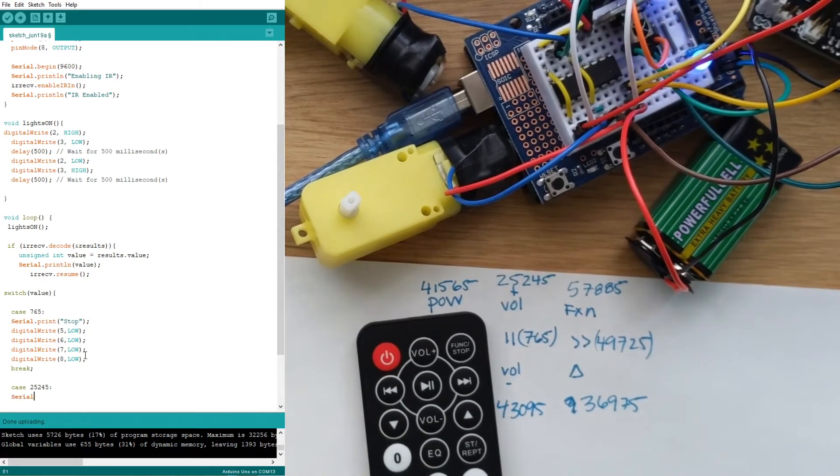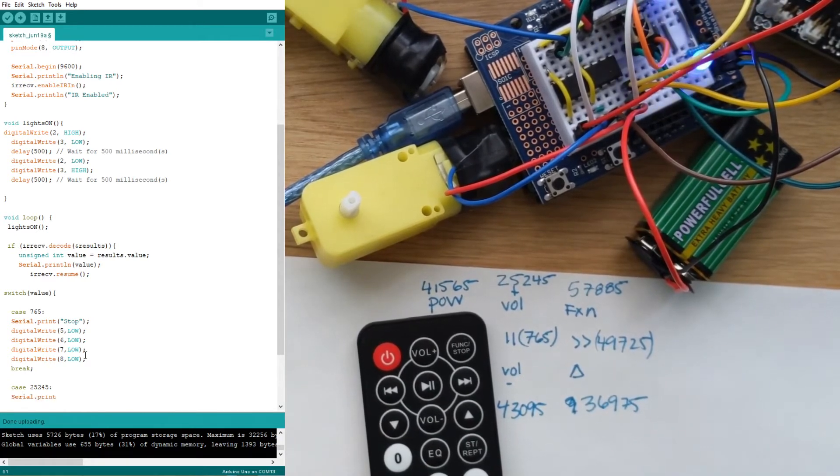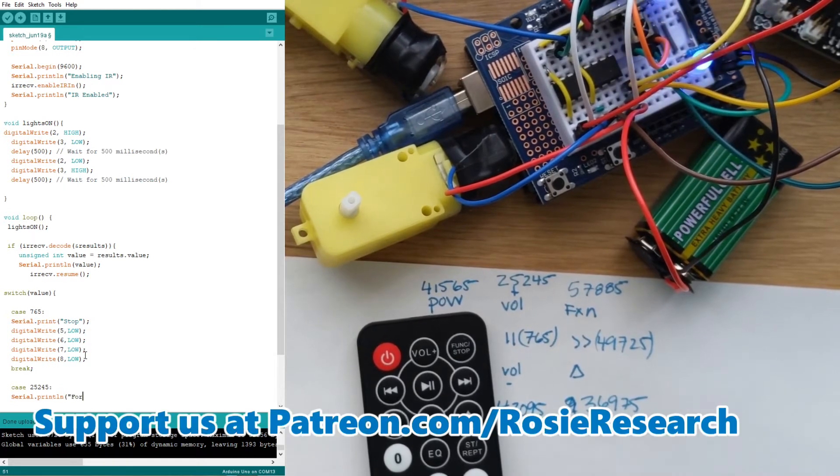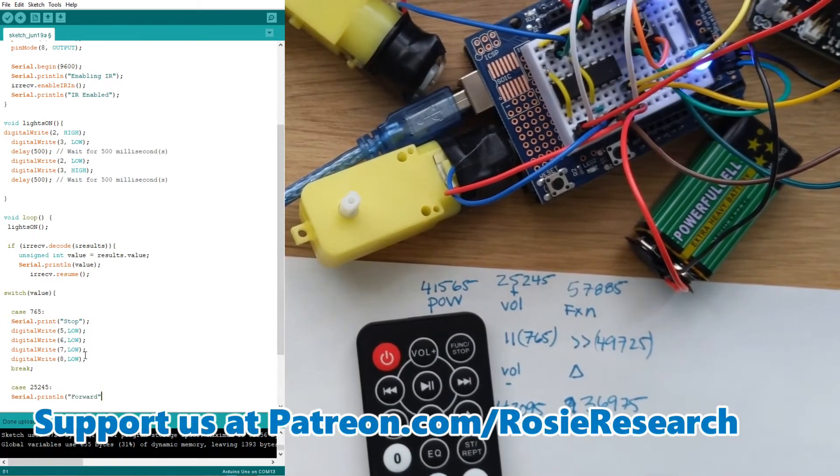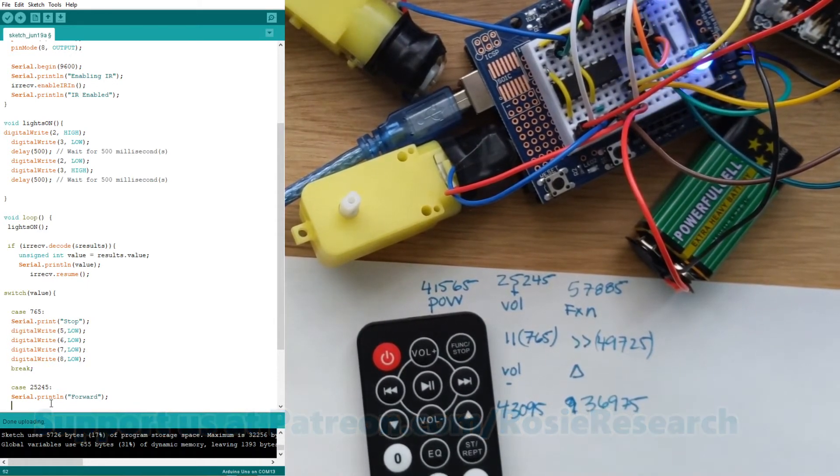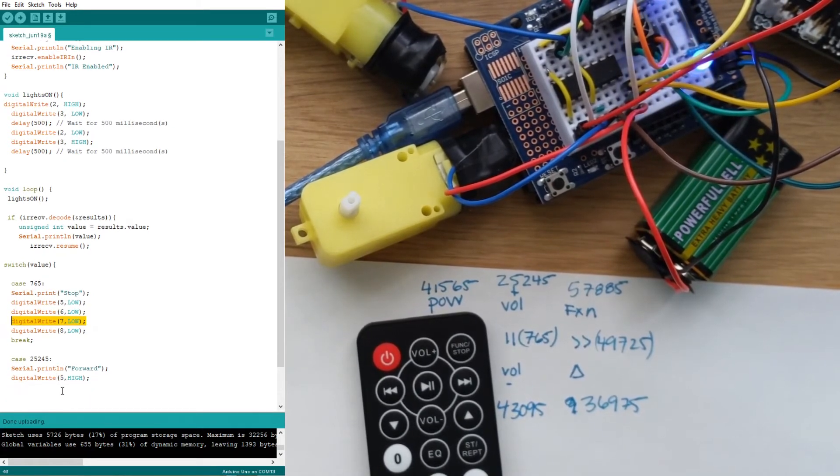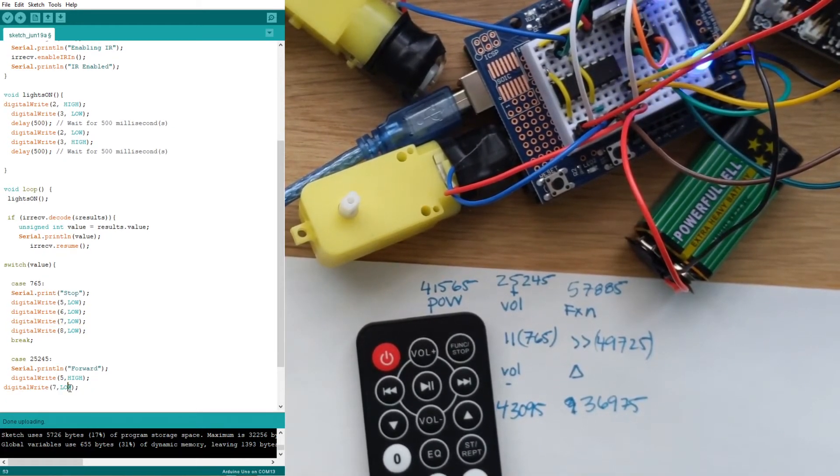The first thing I'll do is serial.println because I'm going to do a new line. I want to know that I am now going forward. That's going to be pretty important in terms of troubleshooting. We also learned that going forward was writing digital pin 5 high, so instead of being low that one would be high, and number 7 was also high and that drove my motors in what was a forward direction in our last lesson.